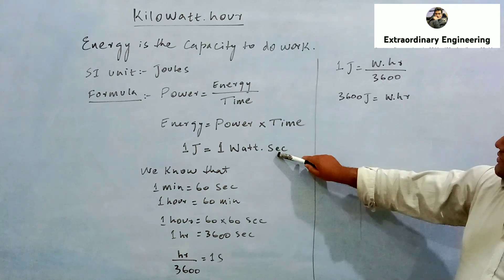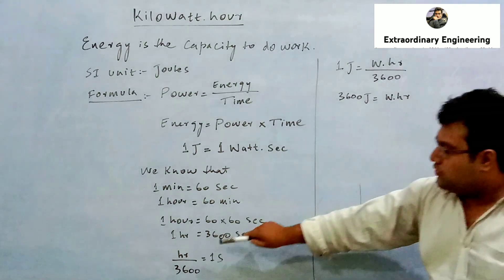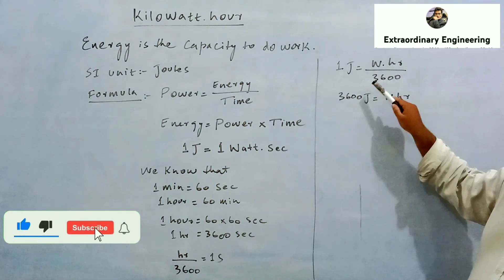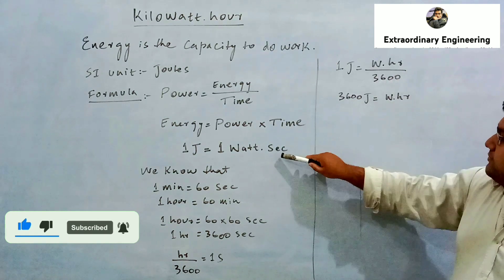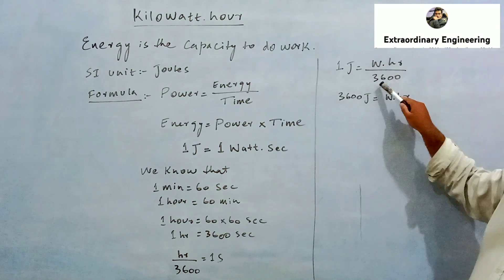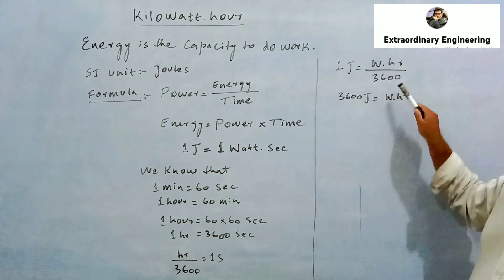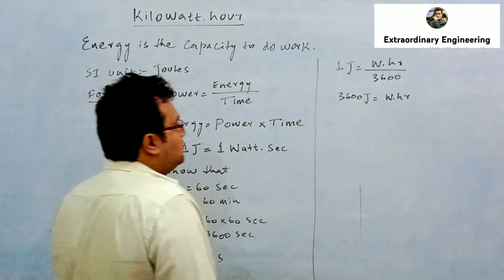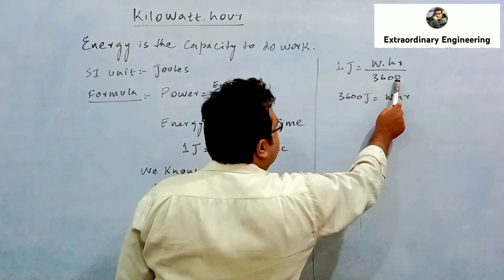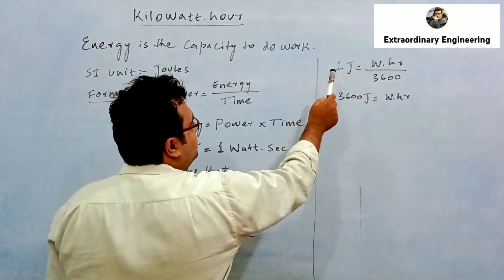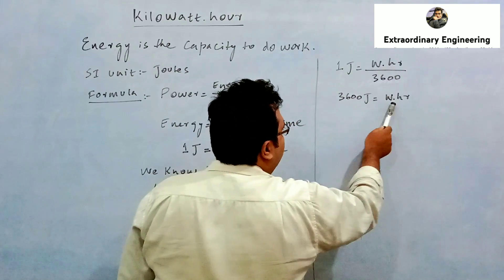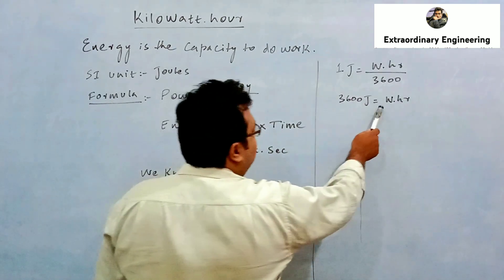In the formula, I will substitute hour/3600 in place of second. So, 1 joule = 1 watt × (hour/3600). Moving 3600 to the left side, we get: 3600 joules = 1 watt·hour.